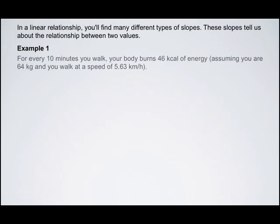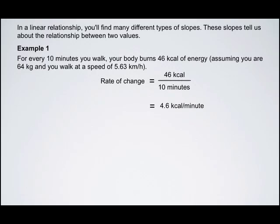Example 1. For every 10 minutes you walk, your body burns 46 kilocalories of energy, assuming that you're 64 kilograms and you walk at a speed of 5.63 kilometers per hour. Now, although those are rather stringent conditions, we can still see how this could work for some people. The rate of change is the number of kilocalories of energy burned for every minute of walking. So when we find the rate of change of somebody's body, we're finding it as 4.6 kilocalories per minute.